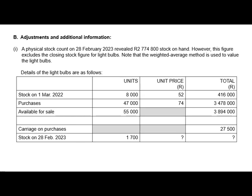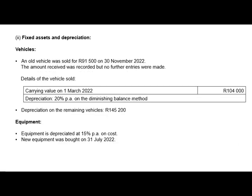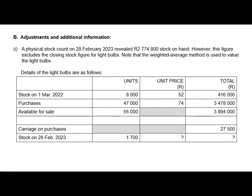Note that the weighted average method is used to value the light bulbs. The 1st of March 2022 is the beginning of the year and 28 February 2023 is the end. We have opening stock of R416,000 with 8,000 units, purchases of R3,478,000 with 47,000 units, giving units available for sale of 55,000. There were no returns specified. They also gave us carriage on purchases of R27,500, and closing stock units on 28 February of 1,700.